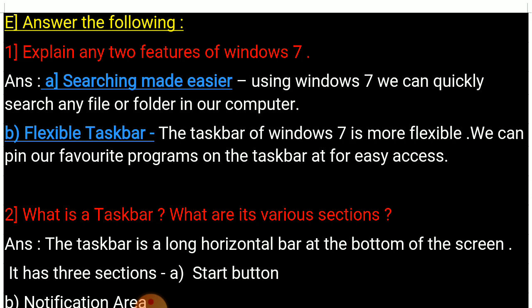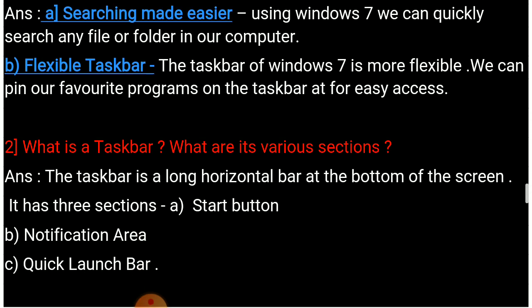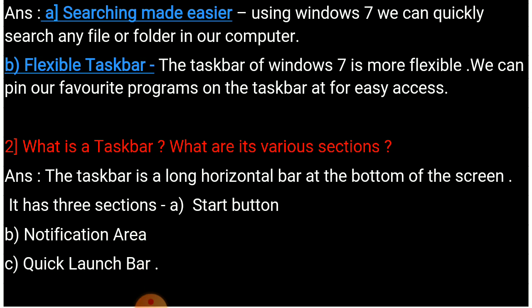We can pin our favorite programs on the taskbar for easy access. Now question number 2: What is a taskbar? What are its various sections? The taskbar is a long horizontal bar at the bottom of the screen. It has three sections: A. Start button, B. Notification area, C. Quick launch bar.